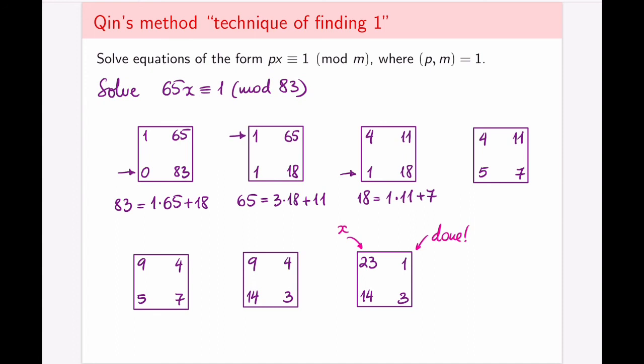The technique of finding one is really a technique of writing one as a combination of the original two numbers, 65 and 83. And following through these squares, we can see that one is 23 times 65 minus 18 times 83. And this also makes it very clear why 23 is indeed a solution to this equation. If I take this equation mod 83, the second term will go away. And I get that 65 times my x or 23 is indeed equal to 1.